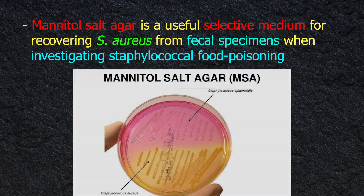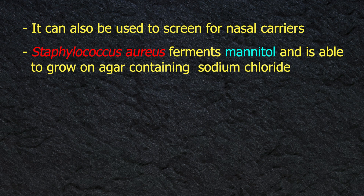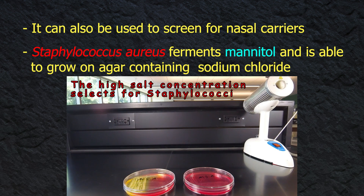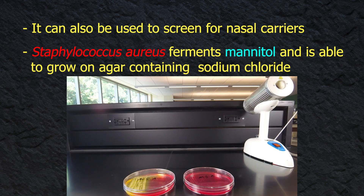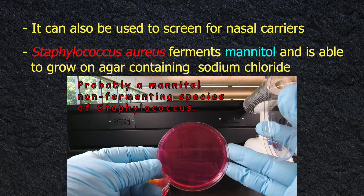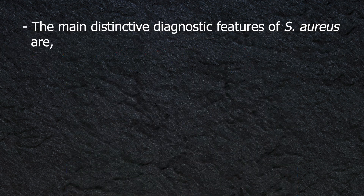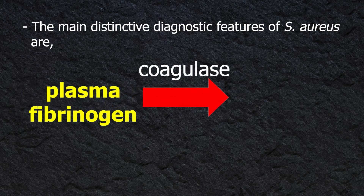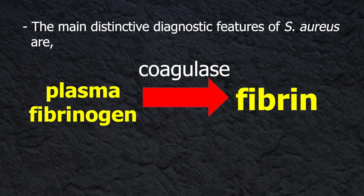On MacConkey agar, S. aureus produces smaller colonies (0.1 to 0.5 mm) after overnight incubation at 35 to 37°C, and most strains are lactose-fermenting. Mannitol salt agar is a useful selective medium for recovering S. aureus from faecal specimens when investigating staphylococcal food poisoning, and can also be used to screen for nasal carriers. S. aureus ferments mannitol and is able to grow on agar containing sodium chloride. Mannitol salt agar containing sodium chloride plus 4 mg/L oxacillin is recommended particularly for isolating MRSA strains. The organisms are non-spore-forming, non-motile, and usually non-capsulate.